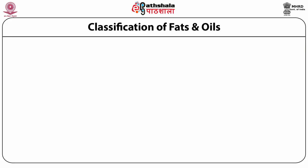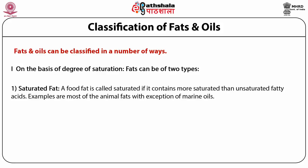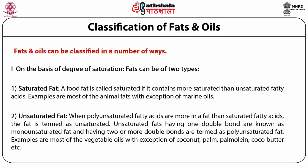Now we see the classification of fats and oils. Fats and oils can be classified in a number of ways. The first classification is based on degree of saturation. A food fat is called saturated if it contains more saturated than unsaturated fatty acids — examples are most animal fats with exception of marine oils. When polyunsaturated fatty acids are more dominant, the fat is termed unsaturated. Unsaturated fats with one double bond are monounsaturated and those with two or more double bonds are polyunsaturated. Examples are most vegetable oils, with exception of coconut, palm, palmolein and cocoa butter.